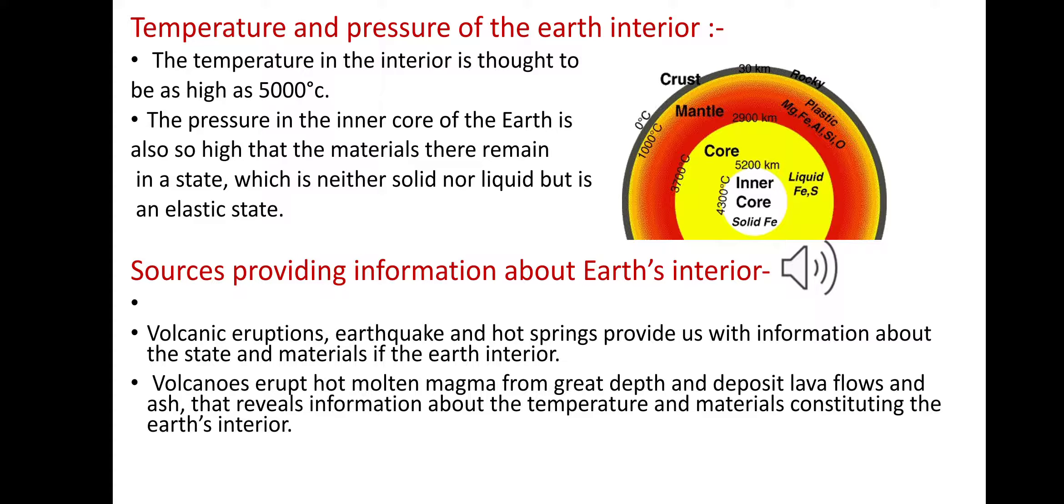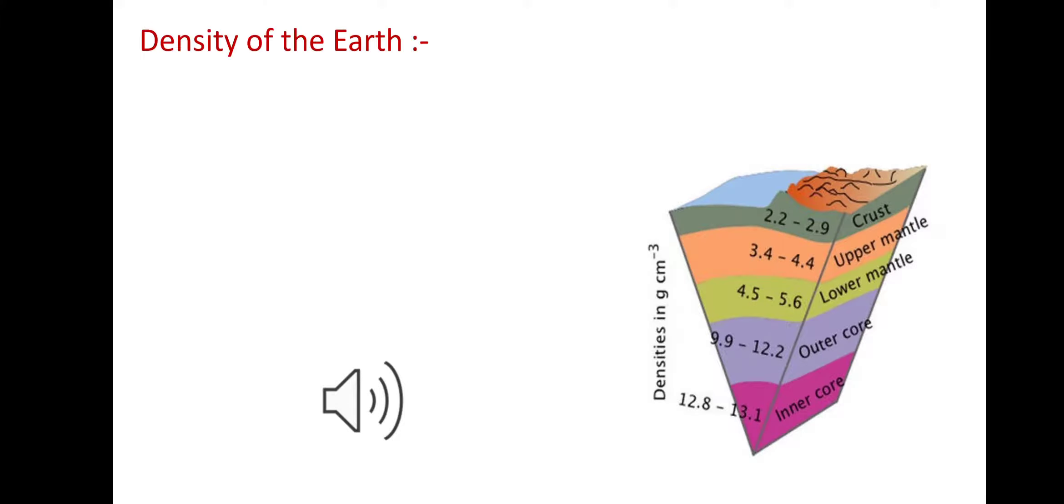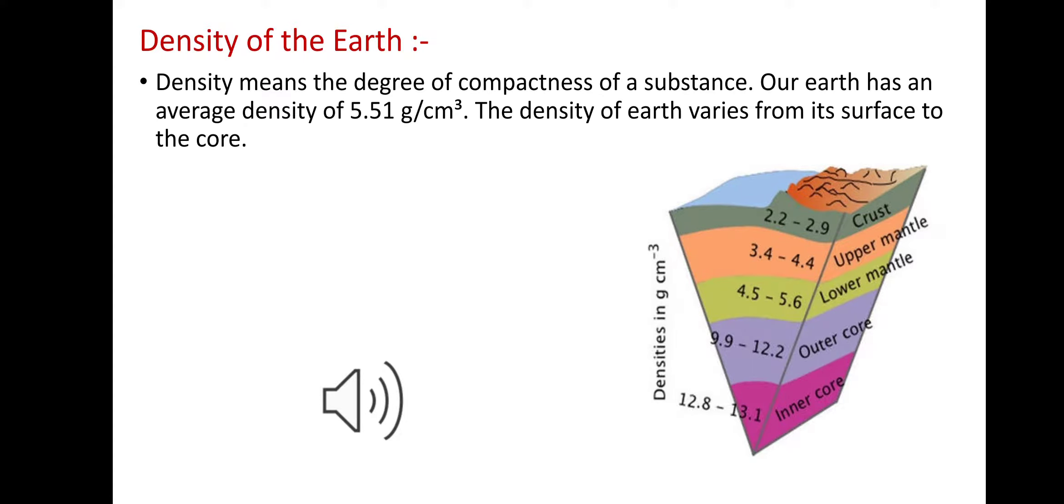Our next point is the density of the Earth. What is density? Density means the degree of compactness of a substance. Earth has an average density of 5.51 grams per centimeter cubed.